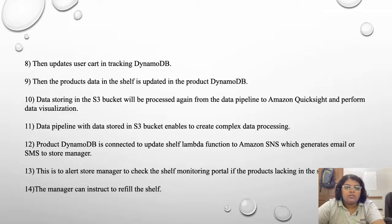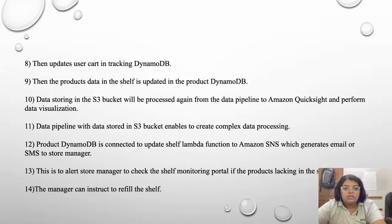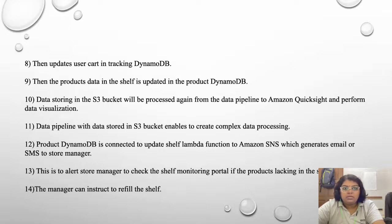Data stored in S3 Bucket will be processed through the data pipeline to Amazon QuickSight to perform data visualization. The data pipeline with data stored in S3 Bucket enables complex data processing. Product DynamoDB is connected to the Update Shelf Lambda function and Amazon SNS, which generates email or SMS to the store manager to alert them to check the shelf monitoring portal if a product is lacking. The manager can then instruct staff to refill the shelf.